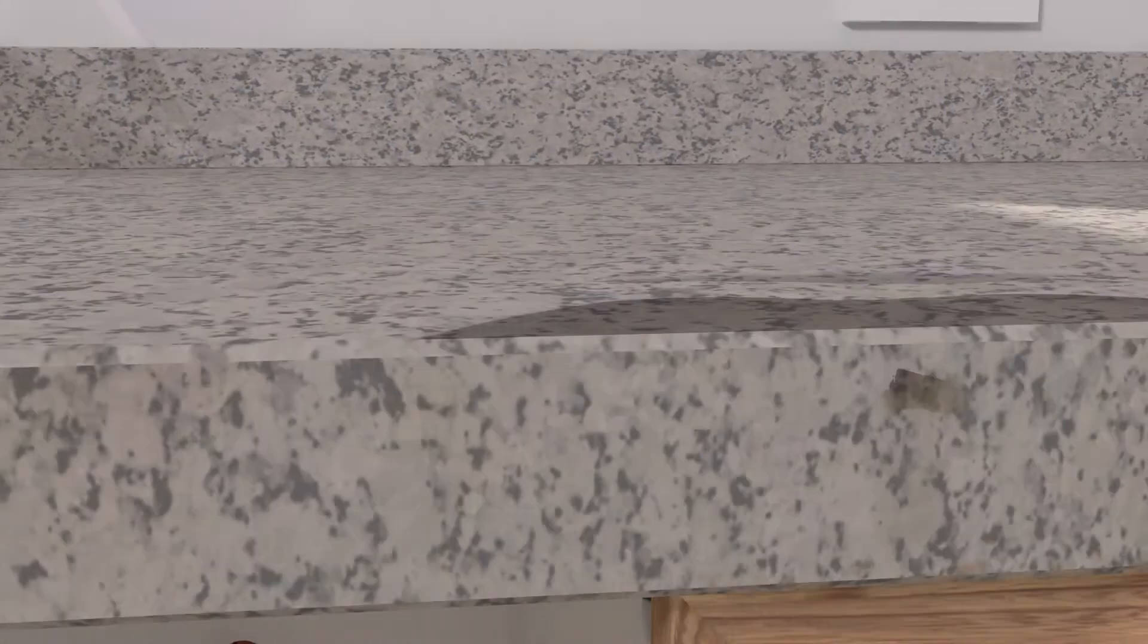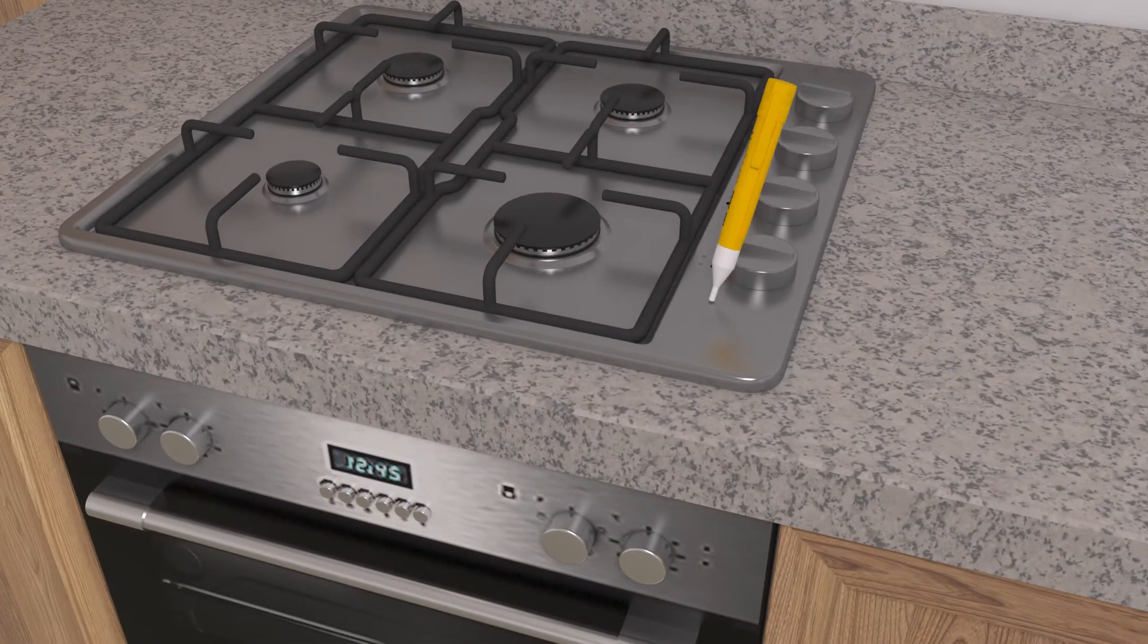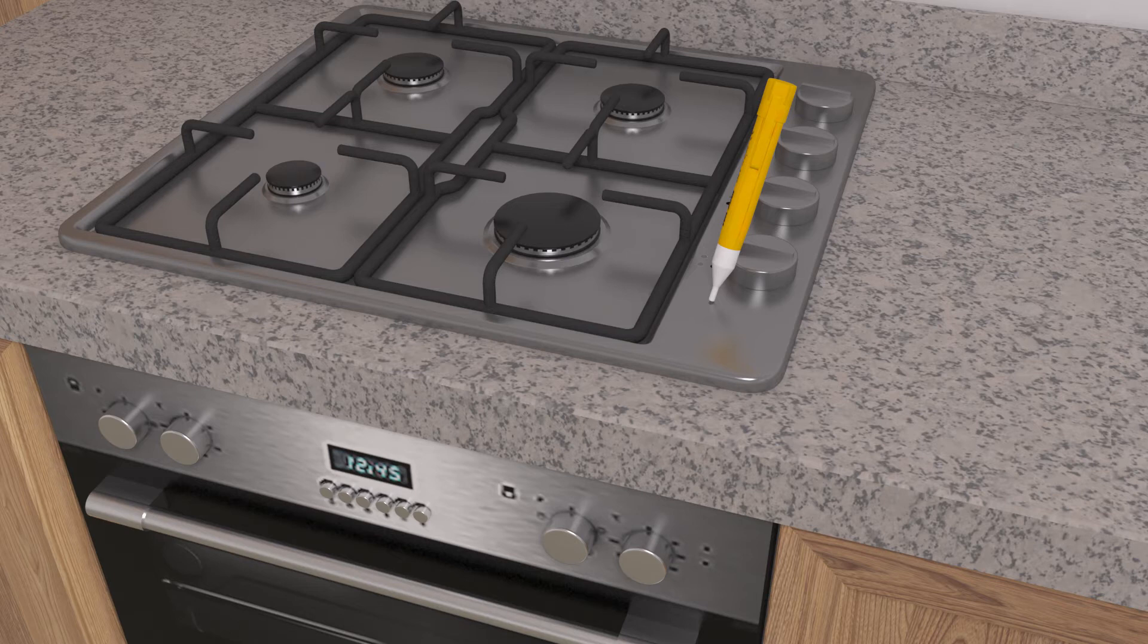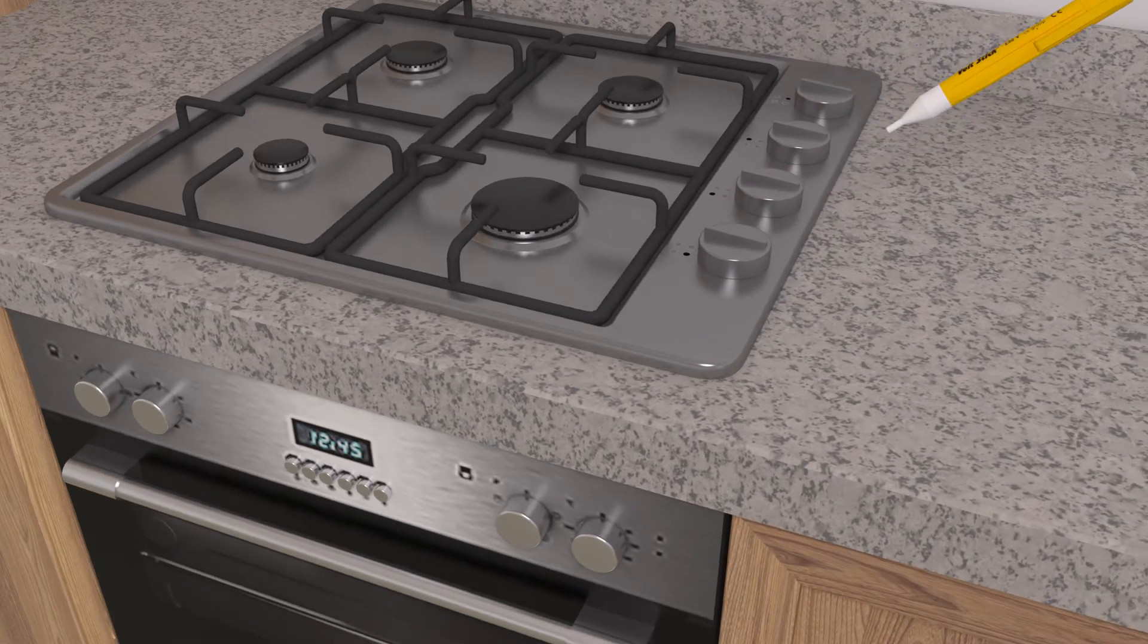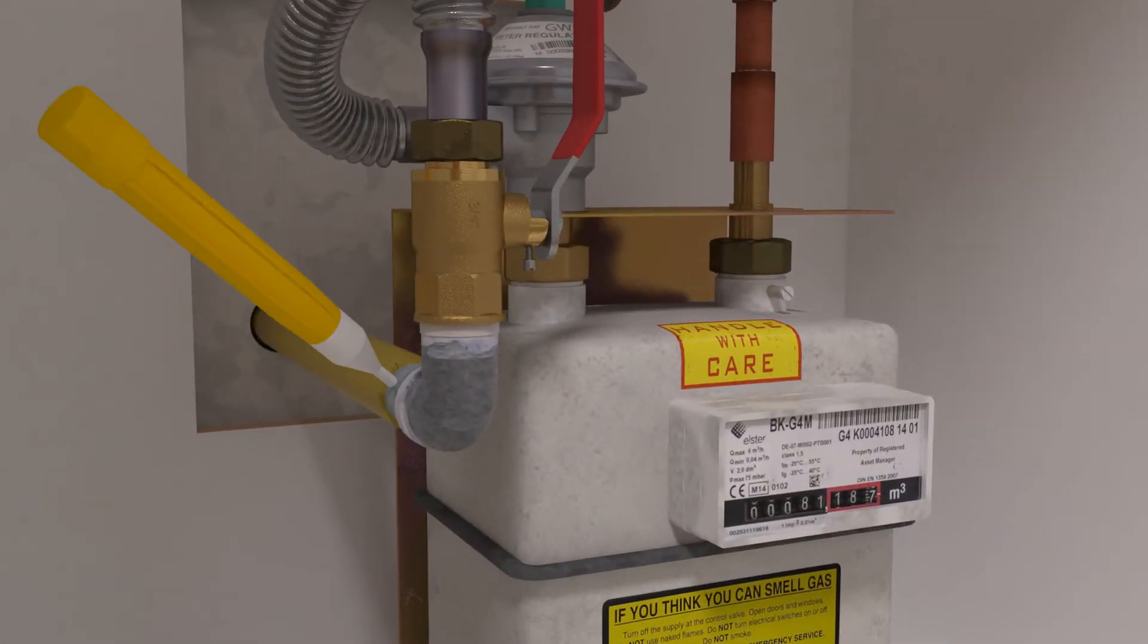Before carrying out the meter exchange, ensure you test your volt stick on a known live source. Test for voltage on the gas appliances and meter installation using the tip of the volt stick. If the volt stick illuminates, then cease work activity and refer to your company procedures.